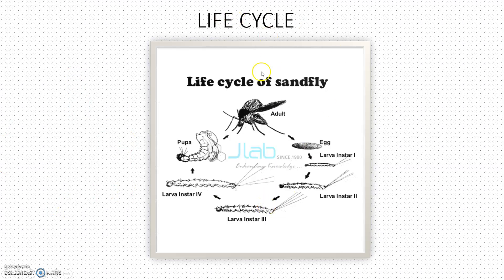This is the life cycle of a sand fly. The adult lays eggs. Eggs will hatch to larvae in instar 1, instar 2, instar 3, and instar 4. Finally, larvae in instar 4 will molt to pupa, and the pupa will become the adult.